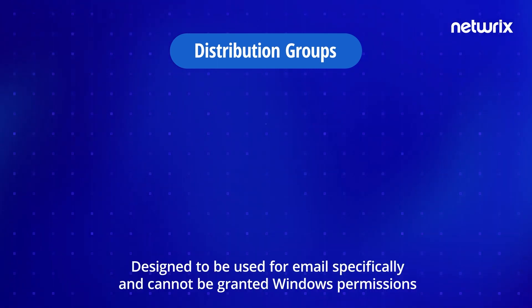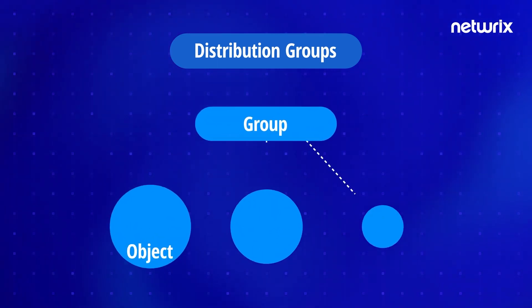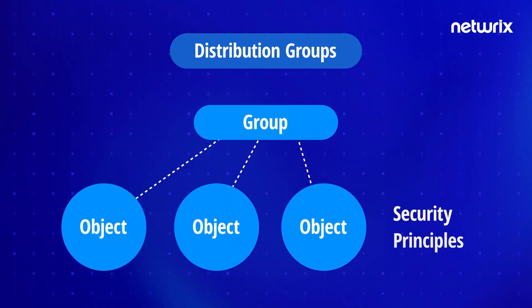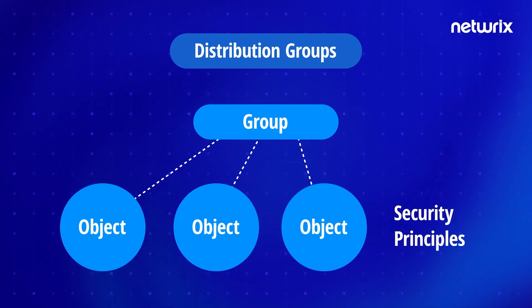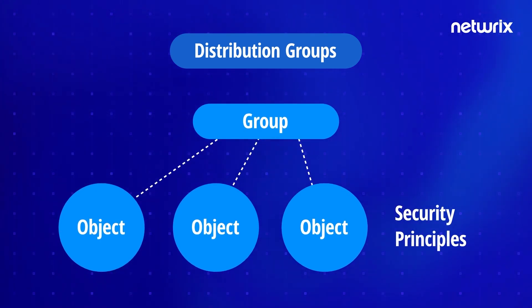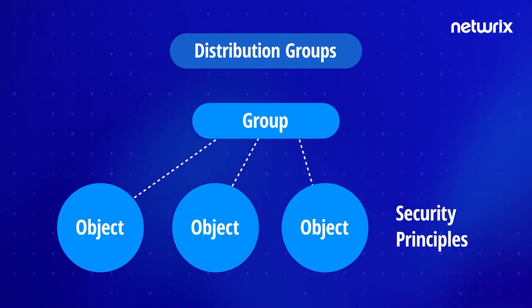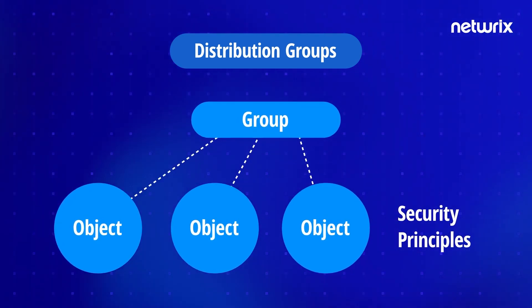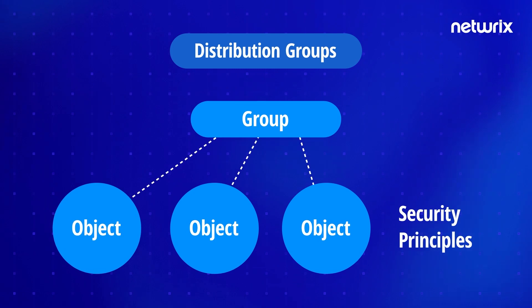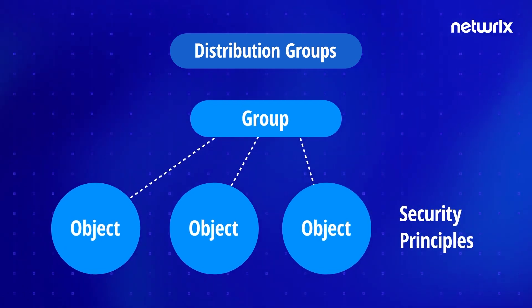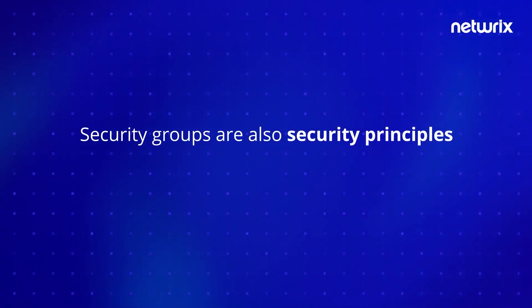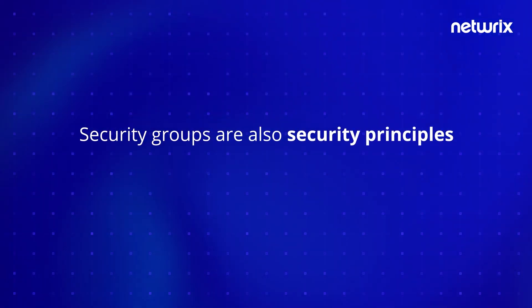Objects in Active Directory that can have permissions granted to them are known as security principles. For example, users are a security principle because a user can be granted rights. Security groups are also security principles.